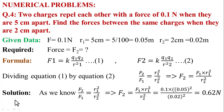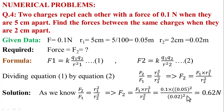Now calculating F2: F2 = F1 × r1² / r2² = 0.1 × (0.05)² / (0.02)² = 0.1 × 0.0025 / 0.0004 = 0.62 Newton. So the final result: F2 = 0.62 Newton.